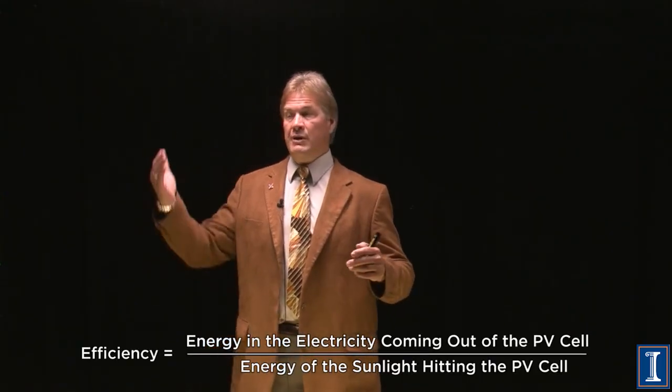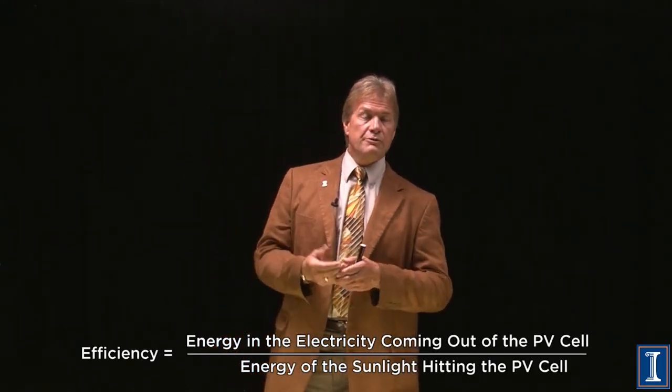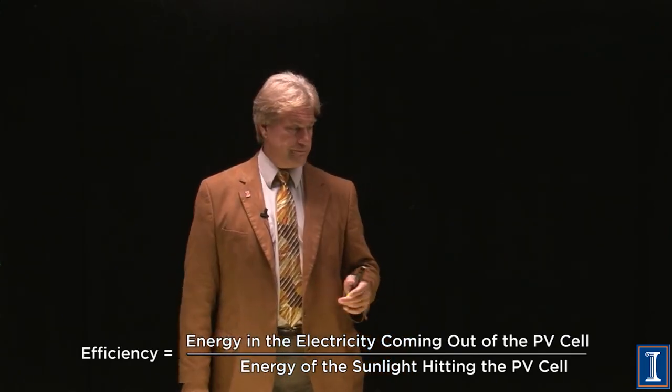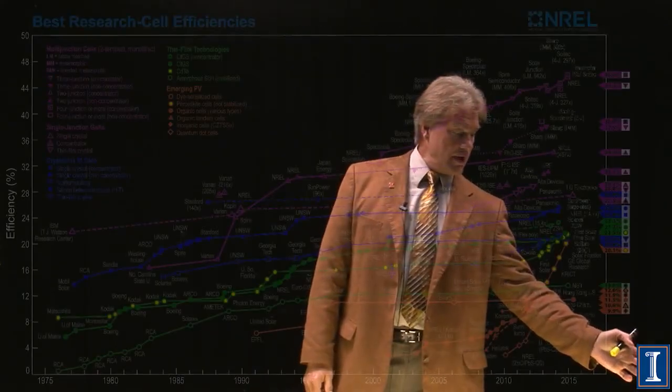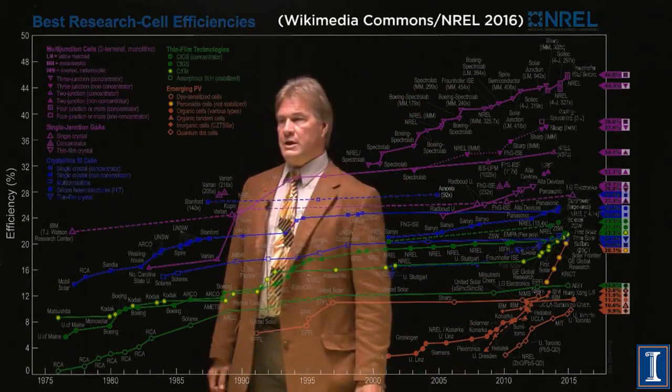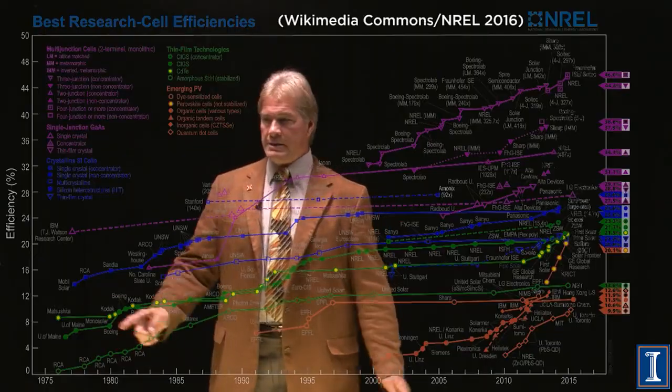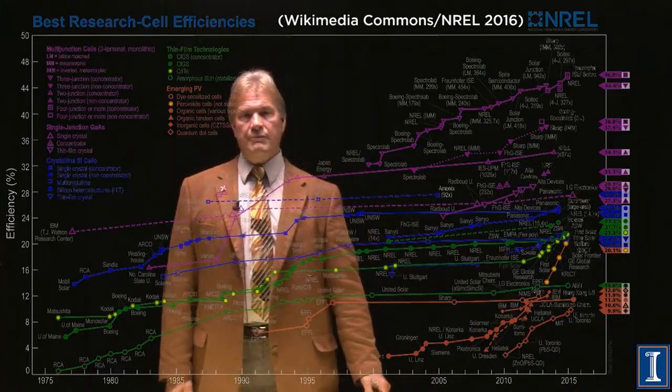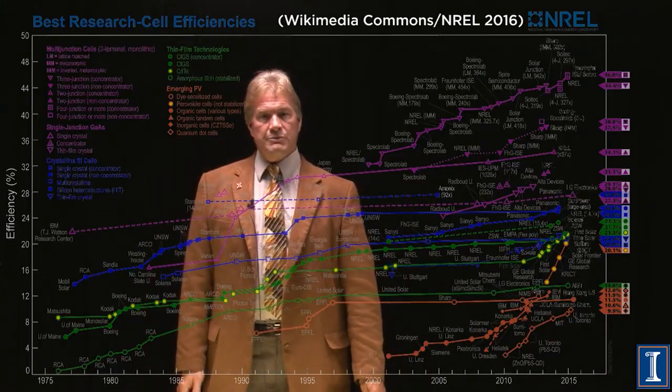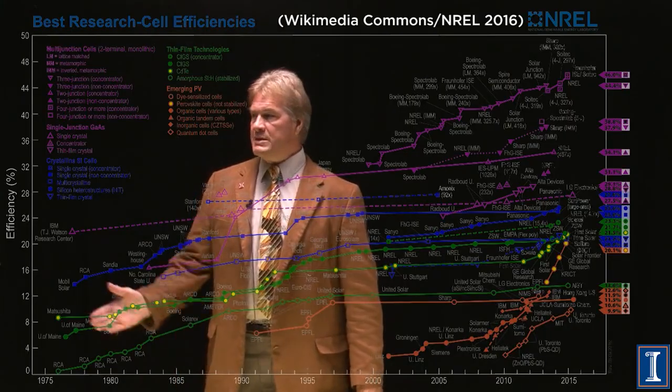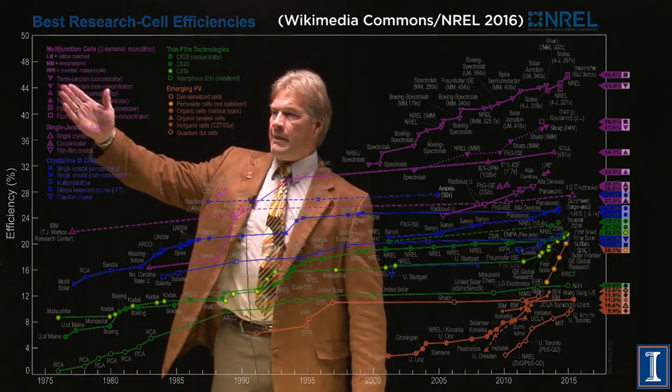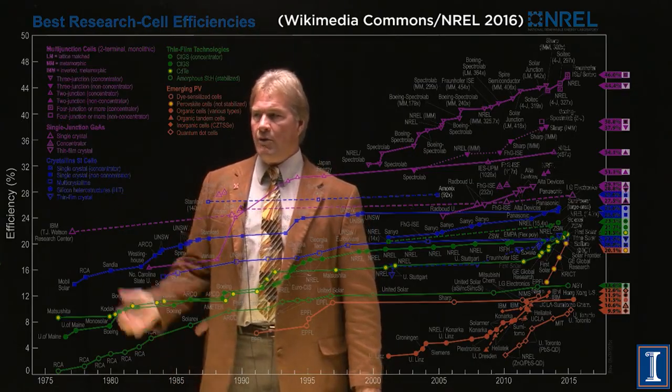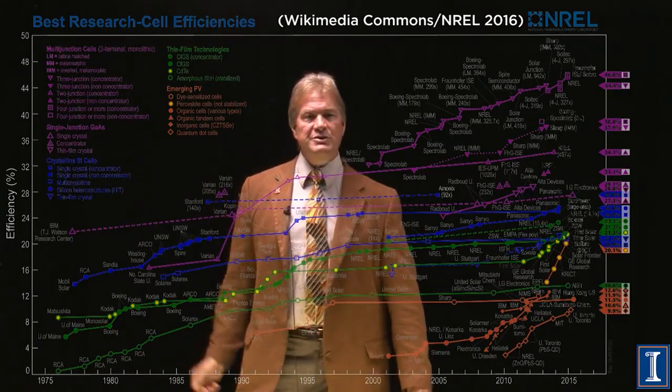Efficiency is defined as the amount of energy from the sun in versus the amount of energy from the electricity out. A very logical number. Let me show you a graph of efficiency over time. So we've got dates on the bottom. This goes all the way out to the latest data from when we were filming this in late 2015. And on the side is the efficiency. And you can see the very best cells are over 40%, 44% efficient.